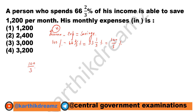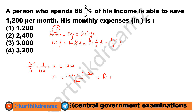Now, 100 by 3 percentage — in order to eliminate the percentage symbol, we divide by 100 into X income, which equals Rs.1200 (the saving). Therefore X equals Rs.1200 into 3 into 100 by 100, giving income as Rs.3600.